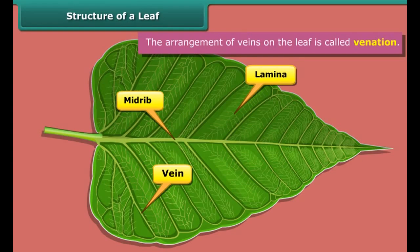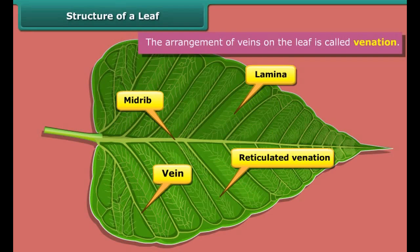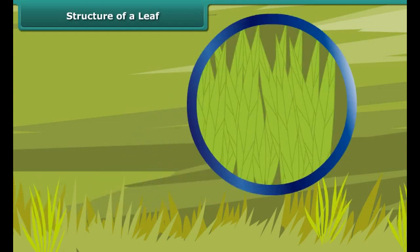The arrangement of veins on a leaf is called venation. When veins appear to branch from the midrib, the venation is called reticulated venation. When the veins run parallel to one another, the venation is termed as parallel venation. This type of venation is generally found in the leaf of grass.